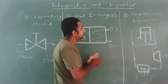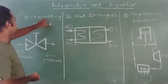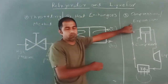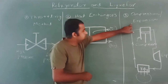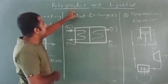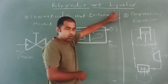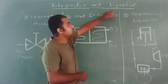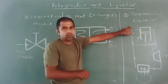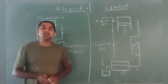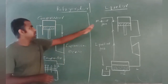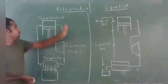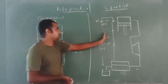So we can see there are three methods normally adopted: the throttling method, heat exchangers, and the compression and expansion device combination method. We need to know what is meant by a refrigerator and a liquefier. I am going to explain what is meant by a refrigerator and a liquefier in connection with the compression and expansion combination method. I have shown two schematic diagrams — the first diagram representing the refrigerator and the second diagram representing the liquefier.